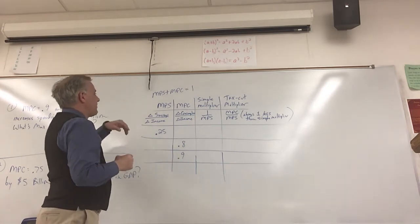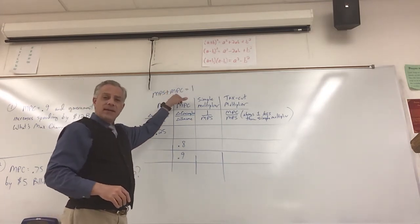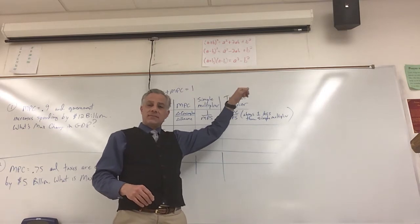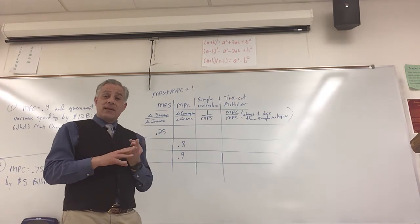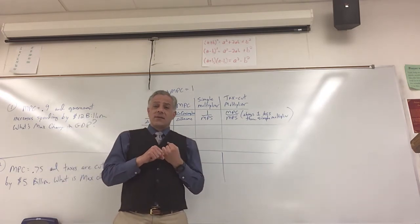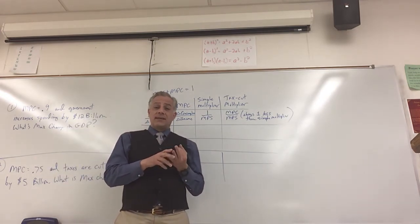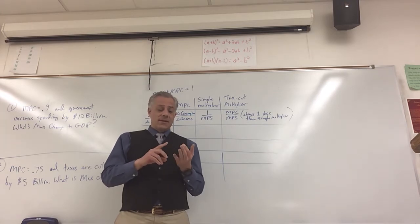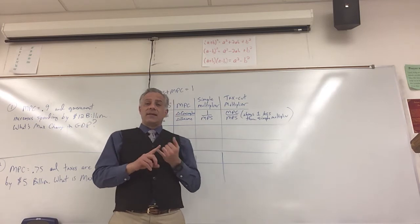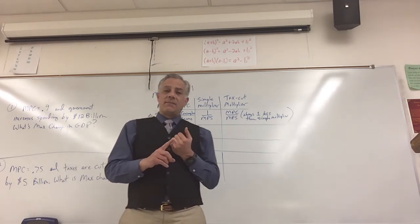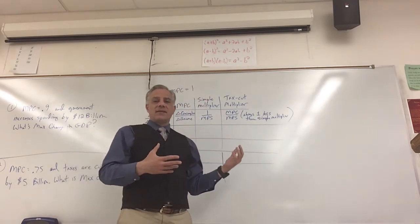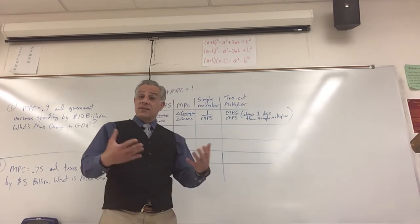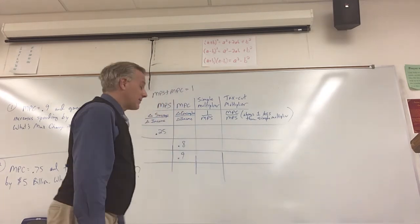So first of all, you have to know that MPS plus MPC always equals one. So there's basically three combinations that are always used: 0.1 plus 0.9, 0.1 MPS and 0.9 MPC; 0.2 MPS and 0.8 MPC; and then 0.25 MPS and 0.75 MPC. I've rarely seen anything other than those combinations, so let's just use those three because that's what we're going to get hit with.